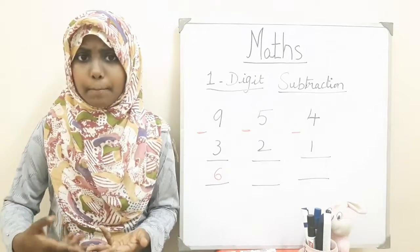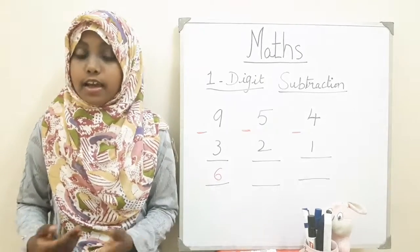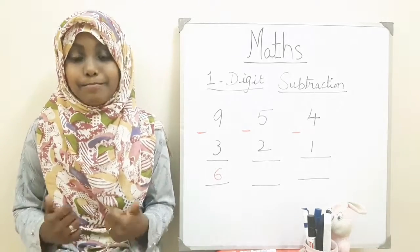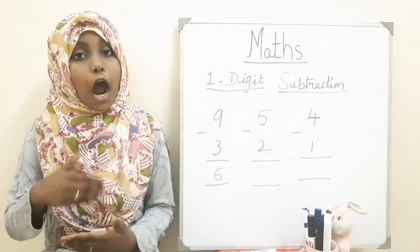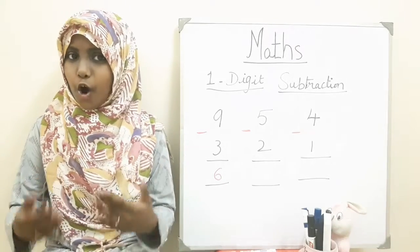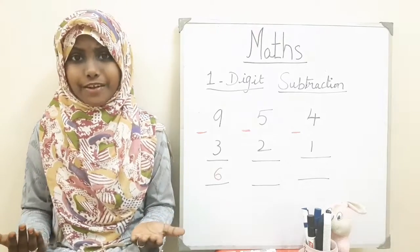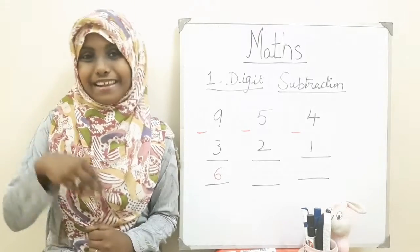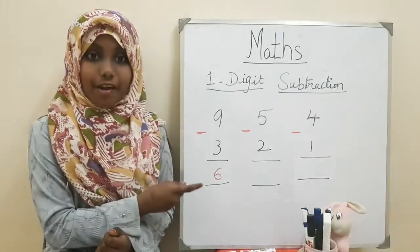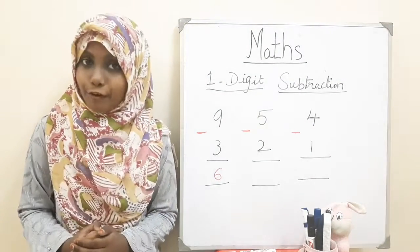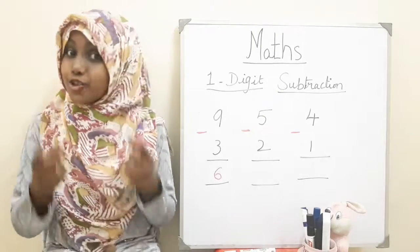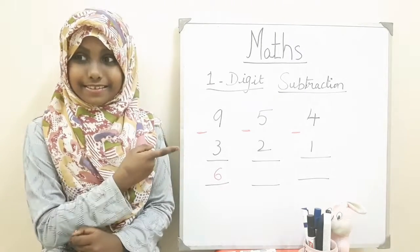Mickey wants to count how many obstacle races were there. Come on, let's count with Mickey. Five minus two: before five is four and three. So we got the answer as three. Let's write the number.